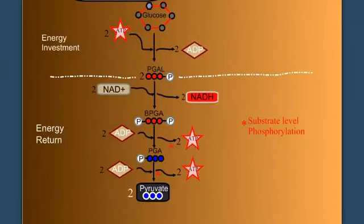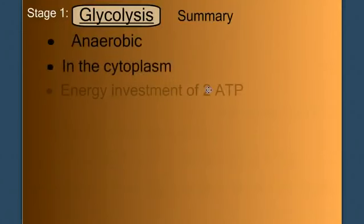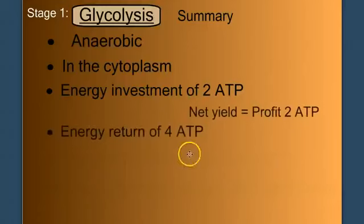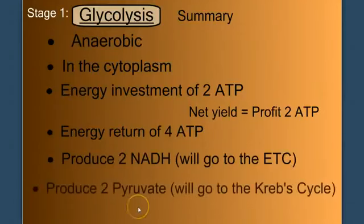So let's summarize glycolysis. Again, it's anaerobic. It doesn't require oxygen. It takes place in the cytoplasm. We have an energy investment step of two ATP, but an energy return of four for a net yield or profit of two ATP. We also produce two NADH molecules, which will go on to the electron transport chain. And we end with two pyruvate molecules, which will go on to the...